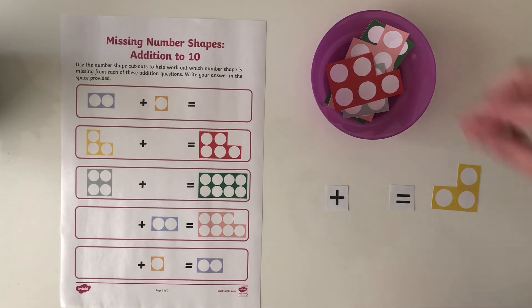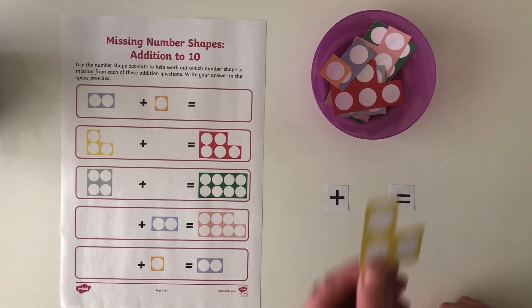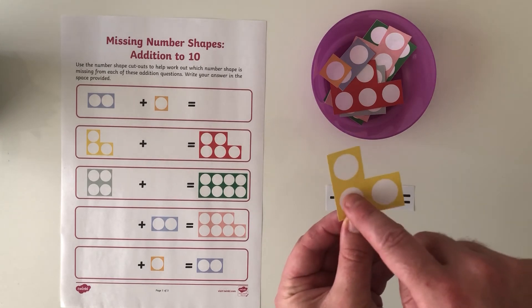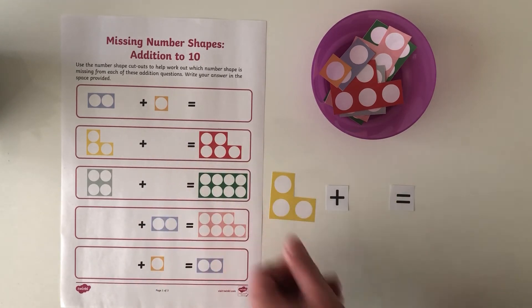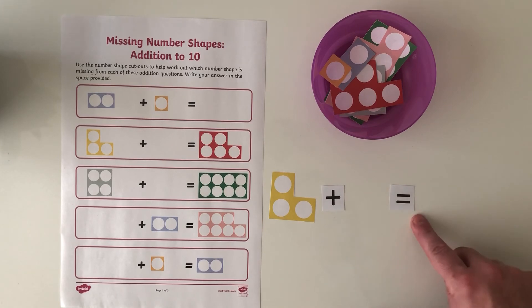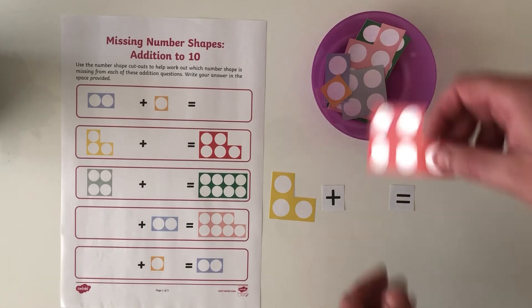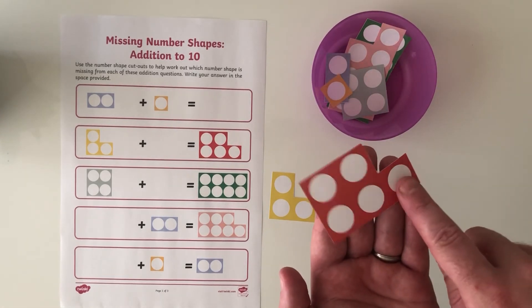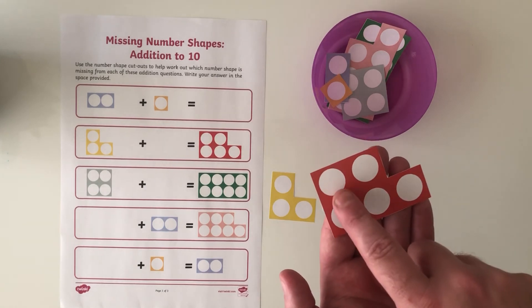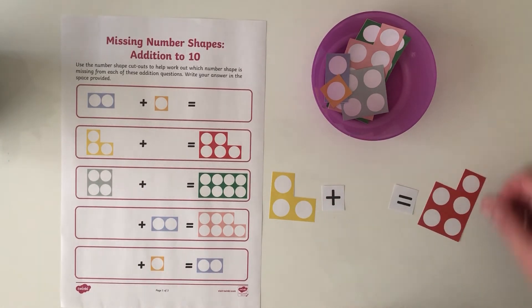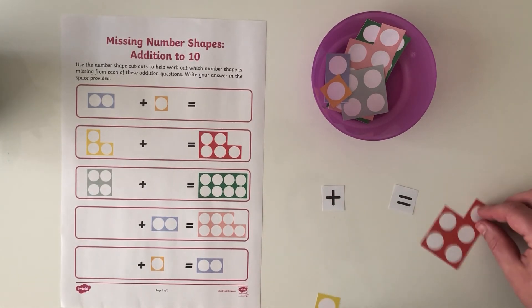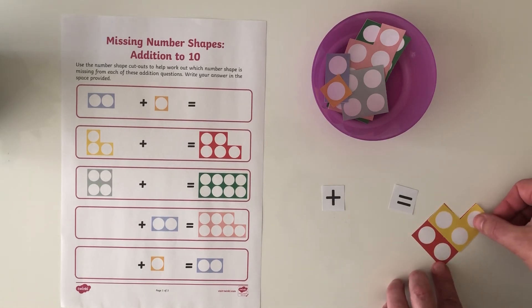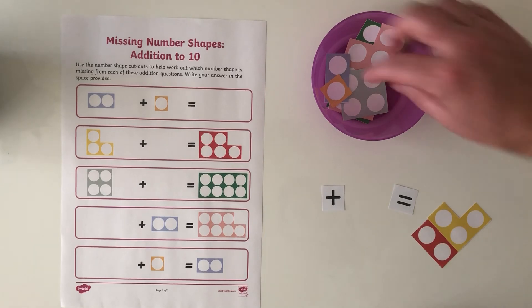Okay, so looking at the next one. This time I'm going to start with my three. One, two, three. I'm going to have to add something and that's going to equal this red one which is worth one, two, three, four, five. Now if I take my technique of laying the shape over what other shape will I need to make five?